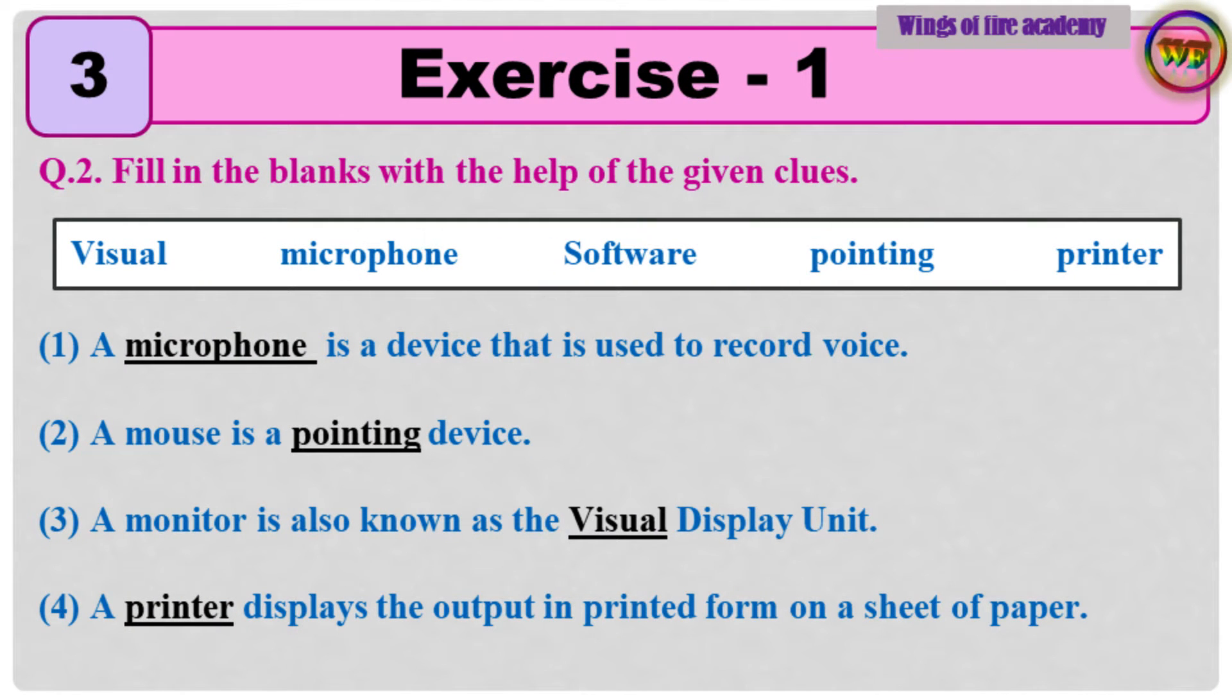Question number 2, Fill in the blanks with the help of the given clues. Visual, Microphone, Software, Pointing, Printer. 1. A microphone is a device that is used to record voice. 2. A mouse is a pointing device. 3. A monitor is also known as the visual display unit. 4. A printer displays the output in printed form on a sheet of paper.